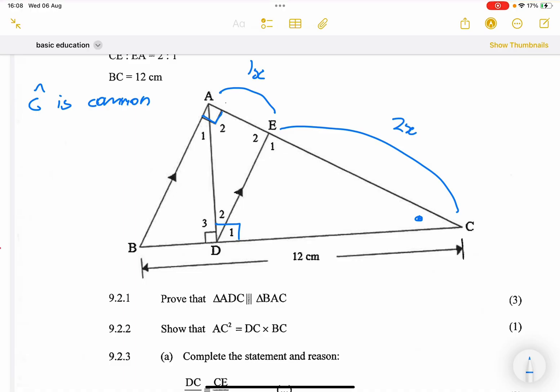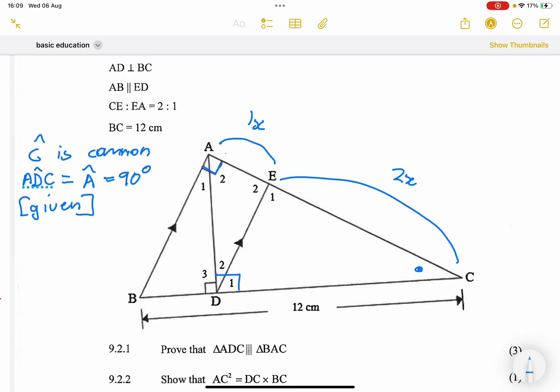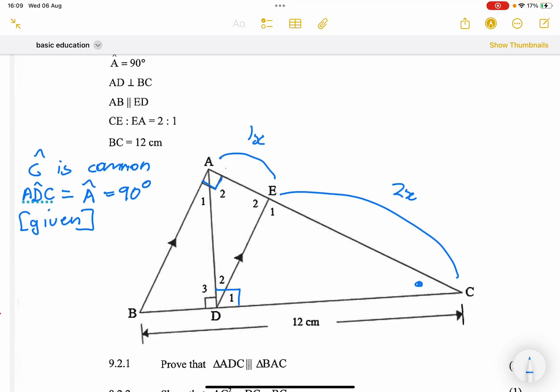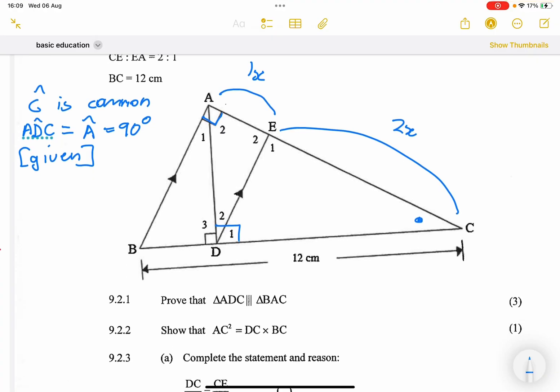And in this case, we've already established that angle ADC, ADC is equal to angle A, that's 90 degrees. Both of those were given. And in this case, you can mention the fact that it was given that ADC is perpendicular to BC. But either way, it's given.